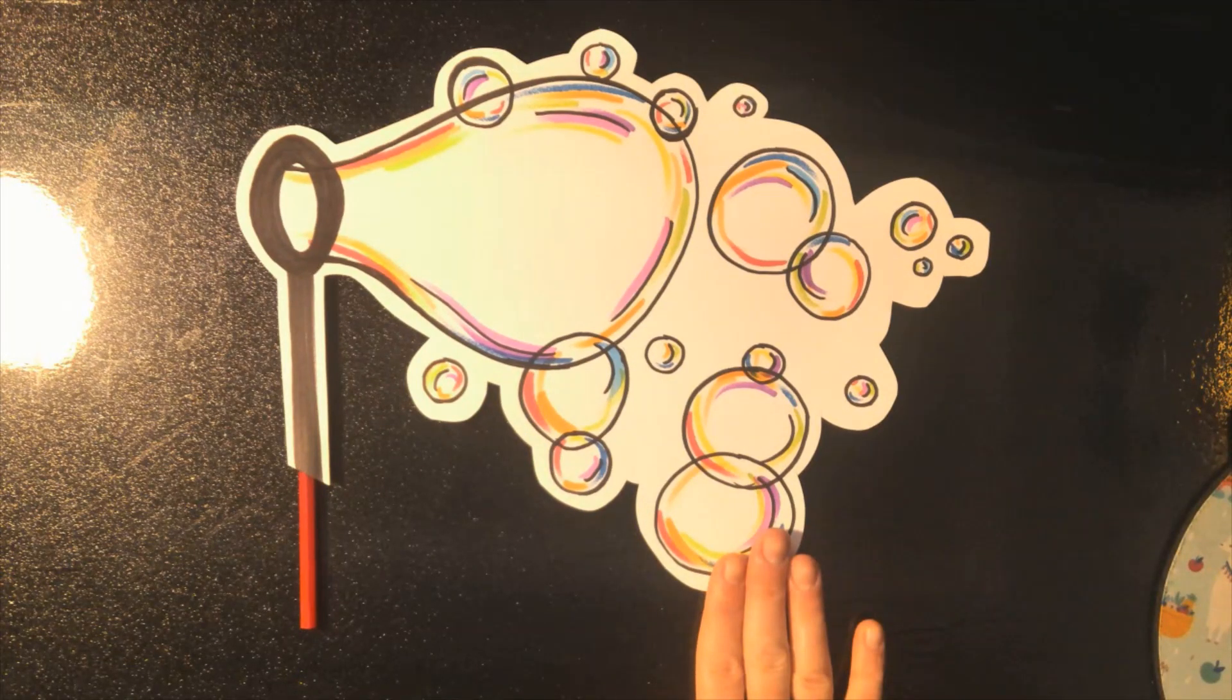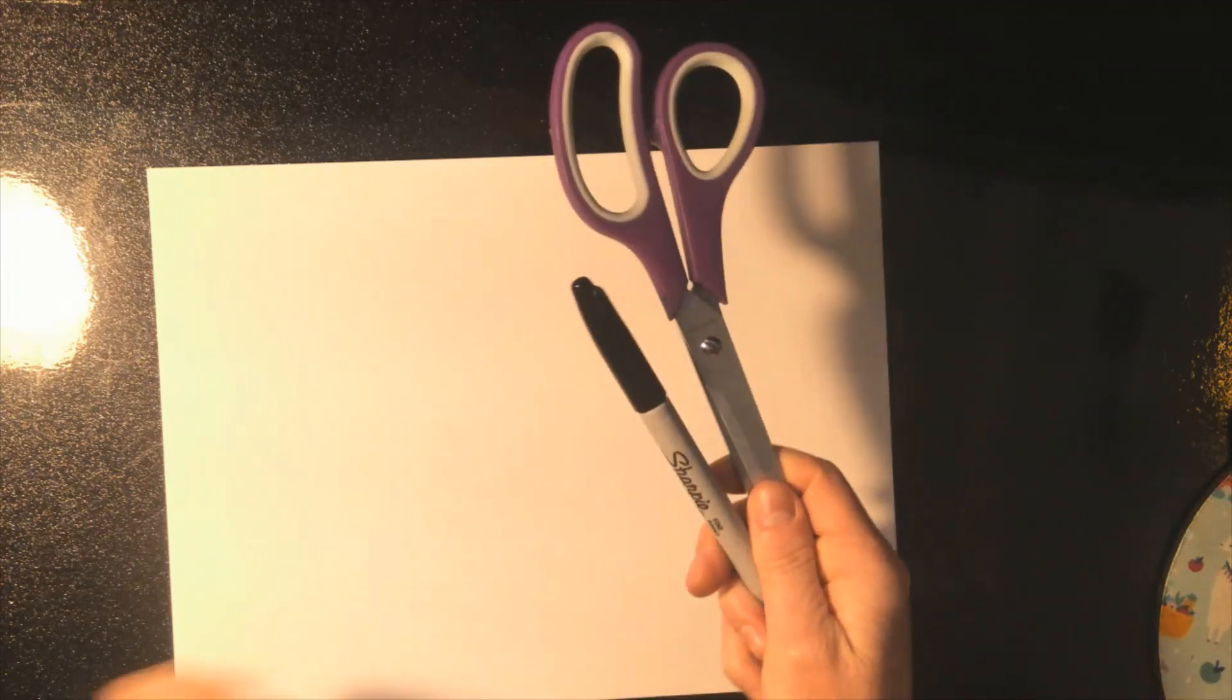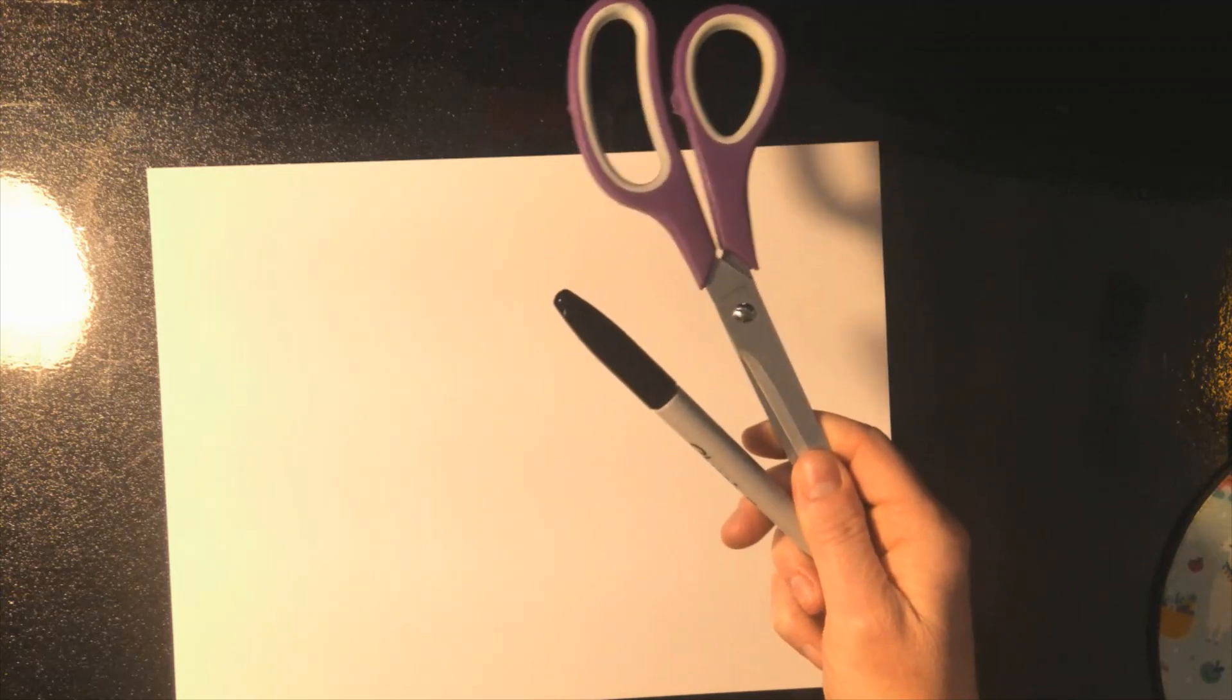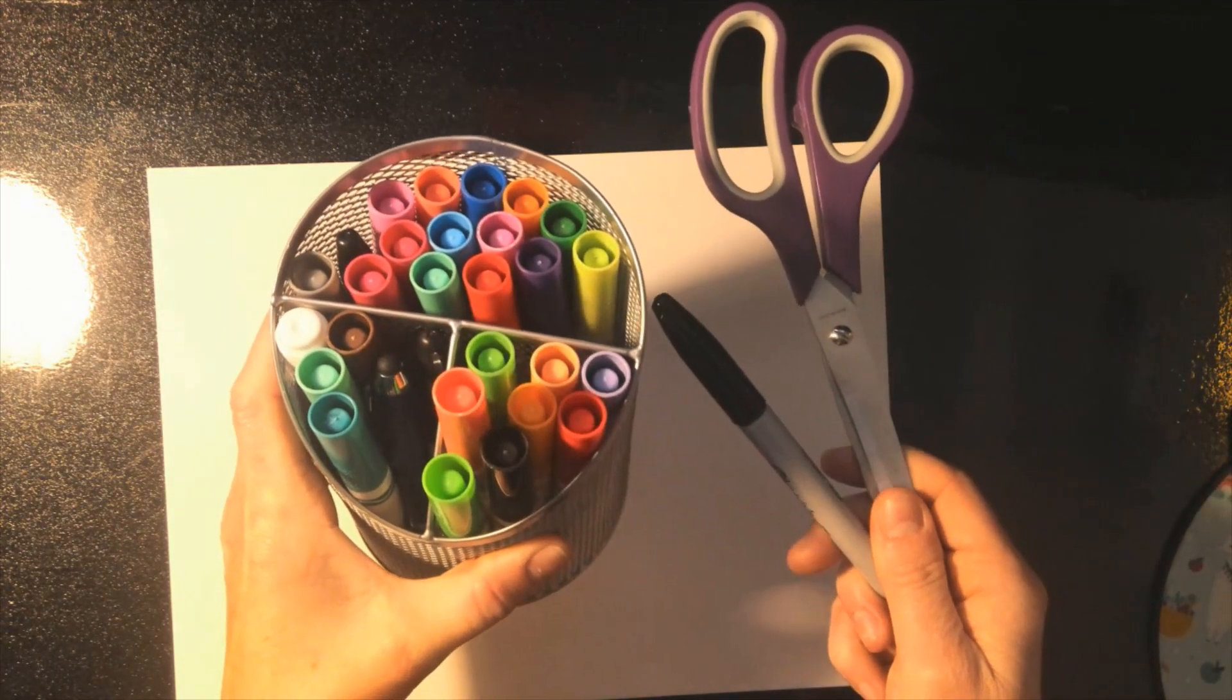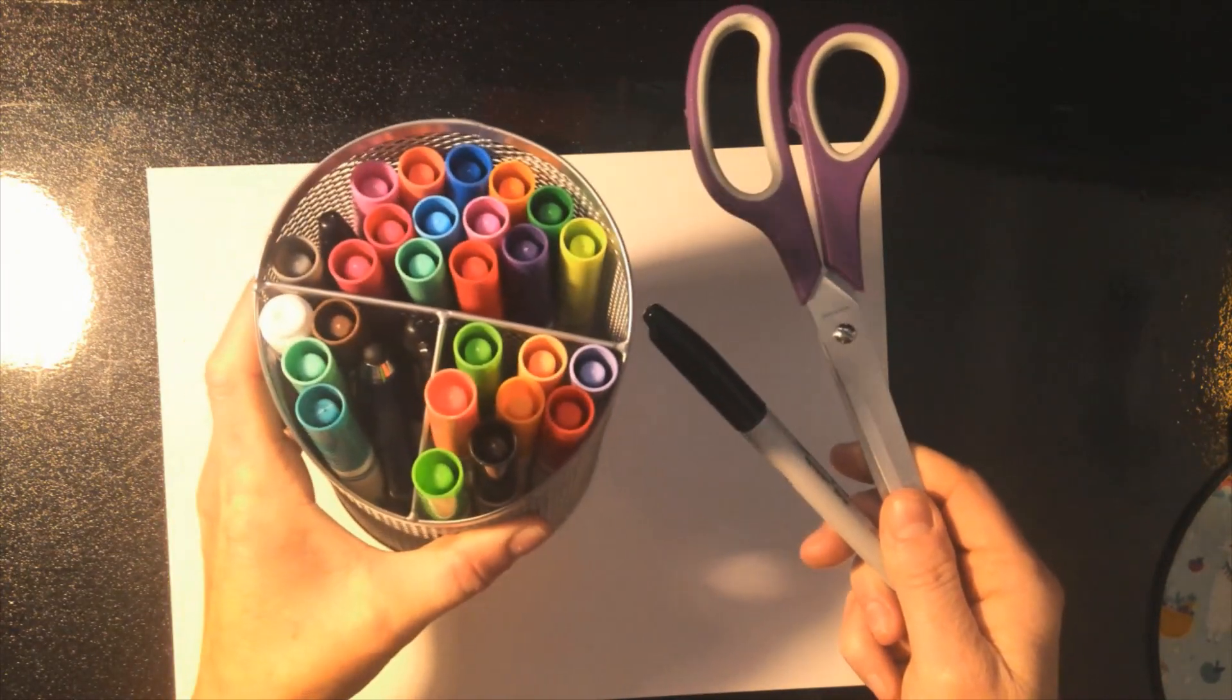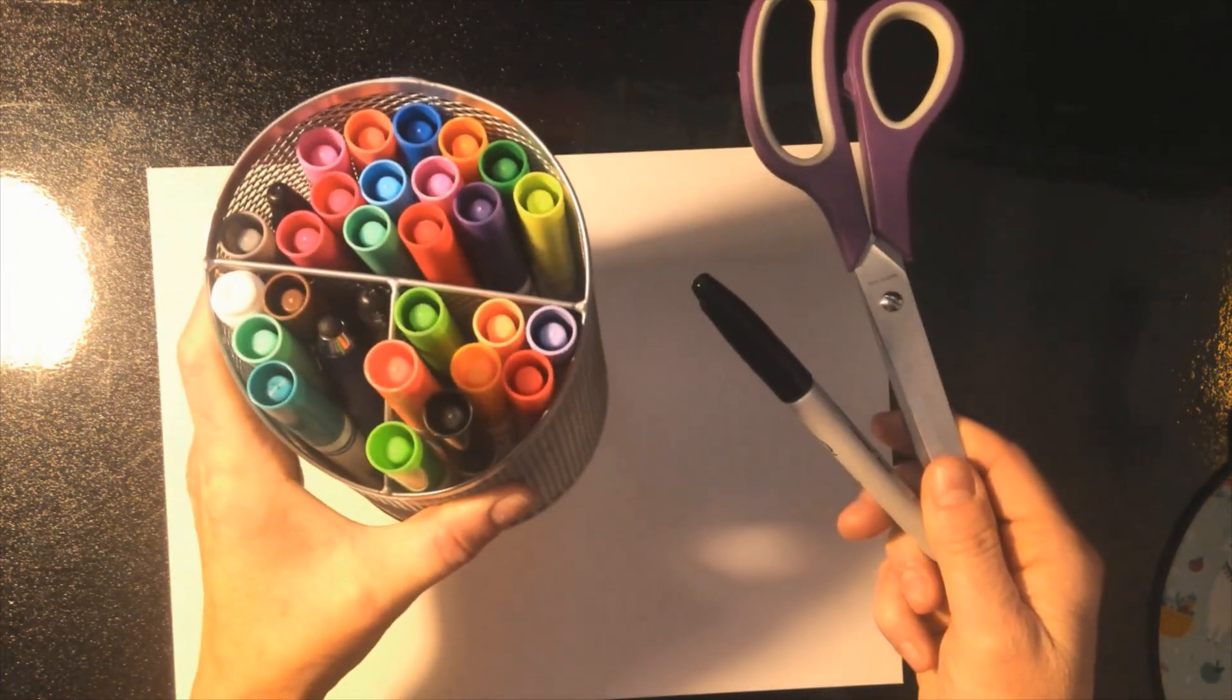All right guys, so we're going to be making our bubble wand, and what you need today is a piece of paper, a pair of scissors, a sharpie or a crayon or whatever you're using to draw with, and something to color and make those lines to just make it look really beautiful. So get those things and you'll be ready to go.